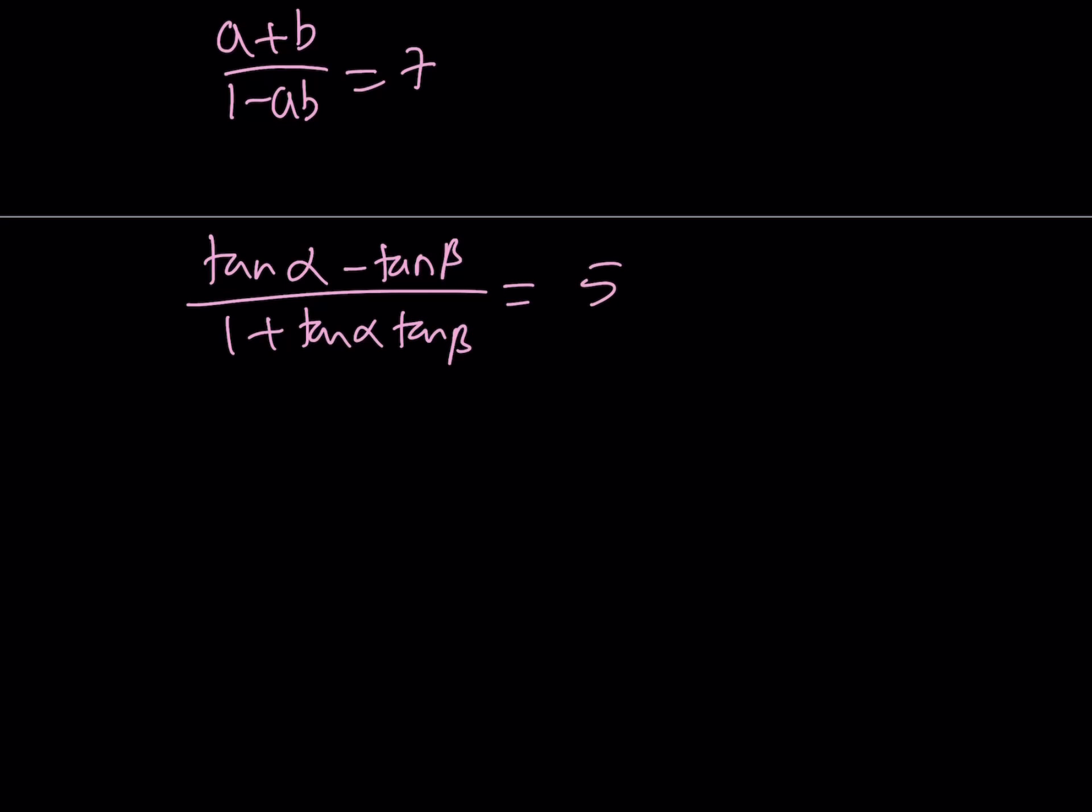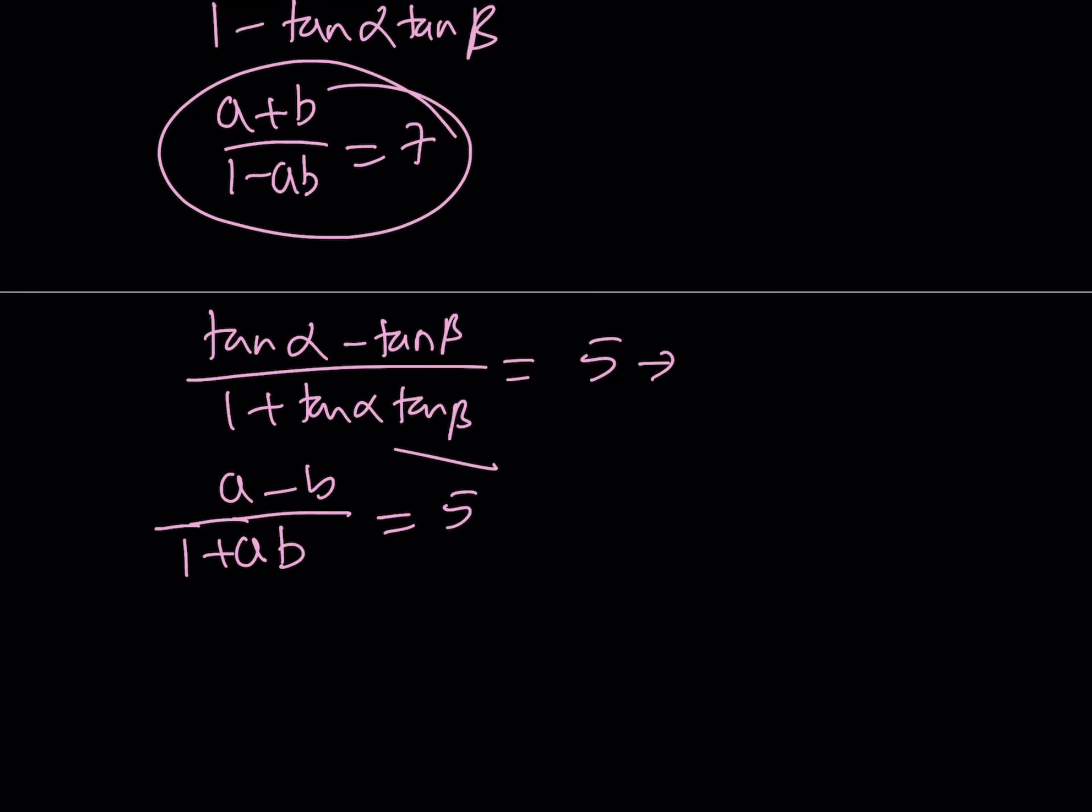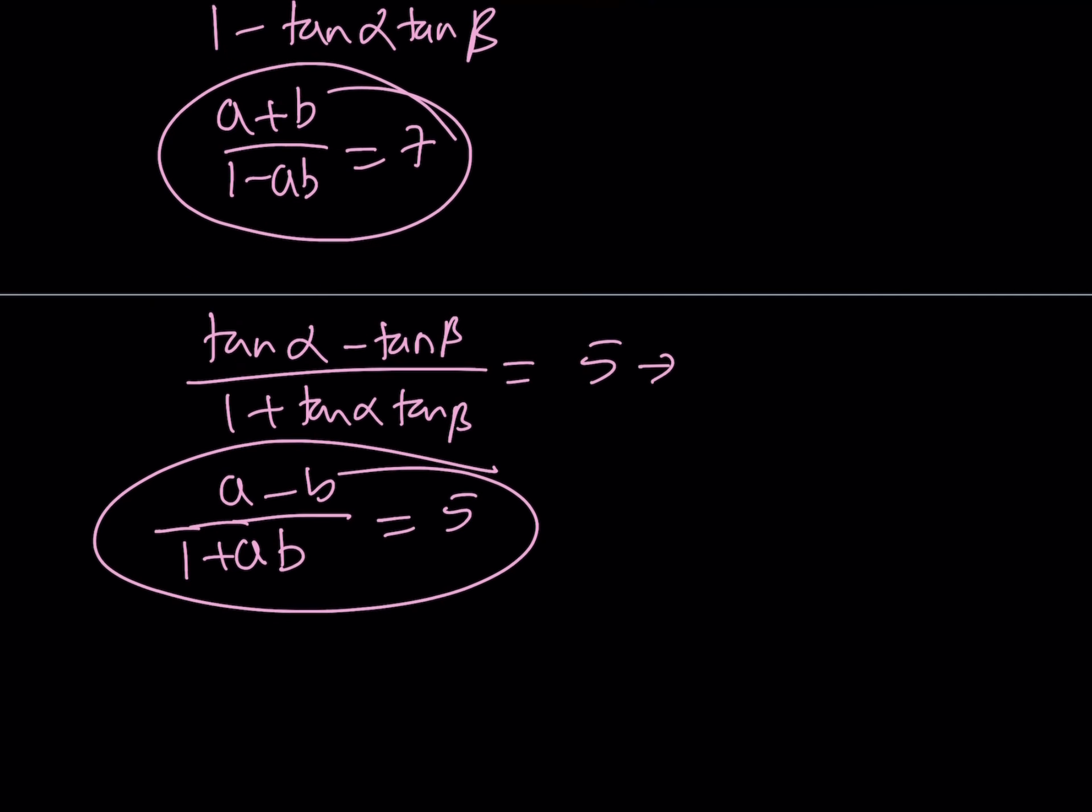Using the same formula, we can write this as a minus b divided by 1 plus ab equals 5. So we now have two equations, and we're going to turn this into a system of equations and solve that system to find the solutions from there.